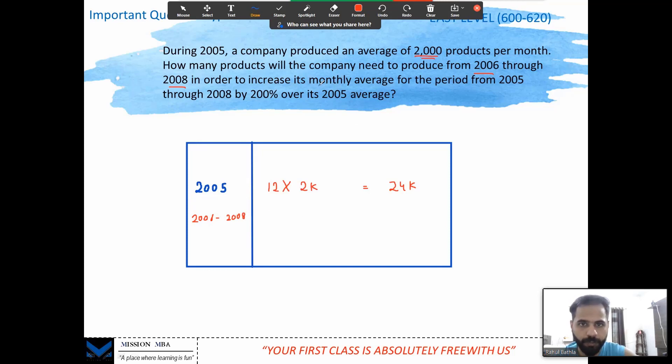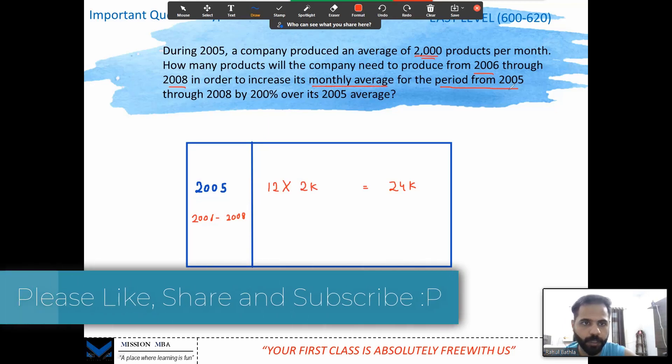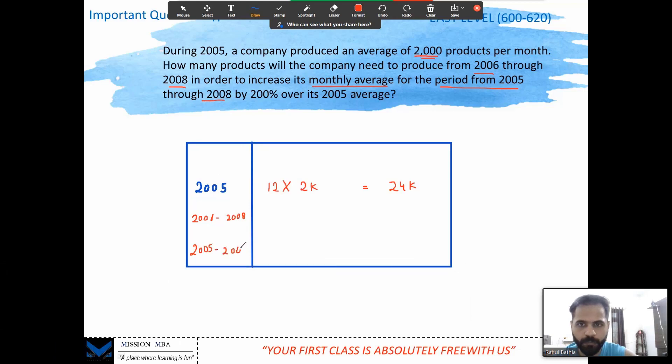Every month I am writing k to make the calculation look a little simpler, so 24k produced. Now how many products will the company need to produce from 2006 to 2008? 2006 to 8, that means 3 years. Now we are given that the average, the monthly average for the entire period 2005 to 2008, the monthly average is 200% over 2005's average. What was 2005's average? 2k products. 200% over—be careful, not 200% of, 200% over—that means 2k plus 200% of 2k, that's clearly 6k.